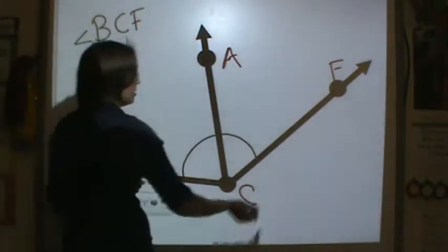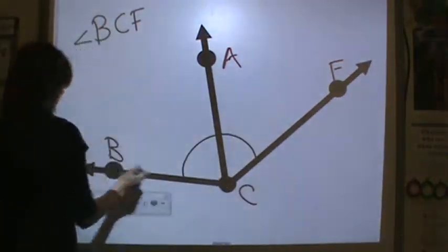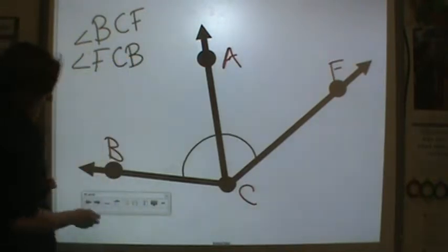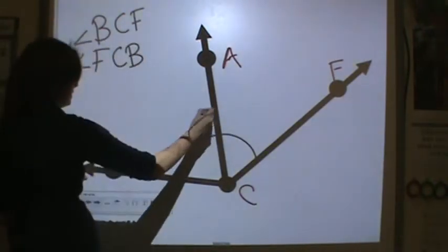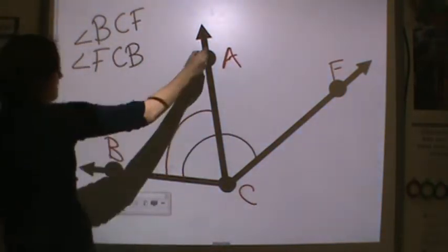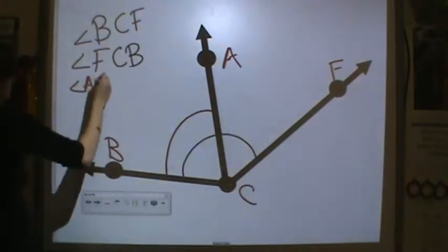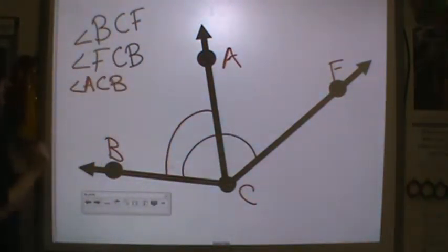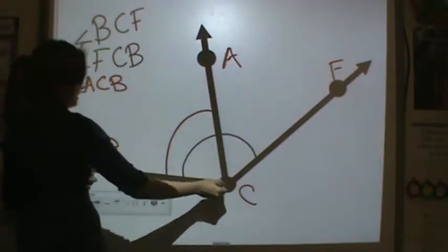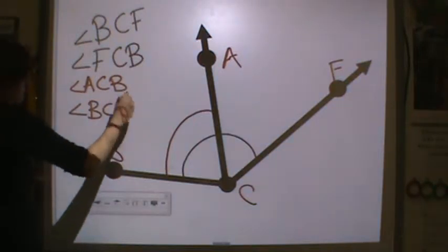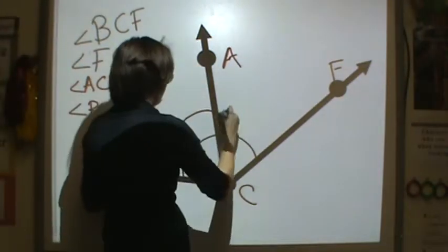Angle B, C, F can also be angle F, C, B. Now I have another angle here, this one. I have A, C, B. I also have angle B, C, A.